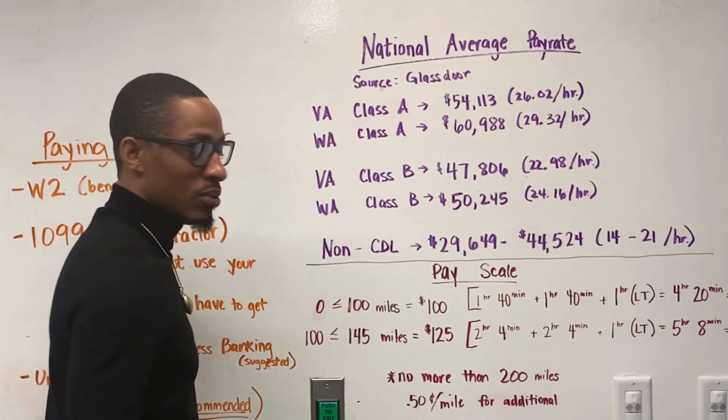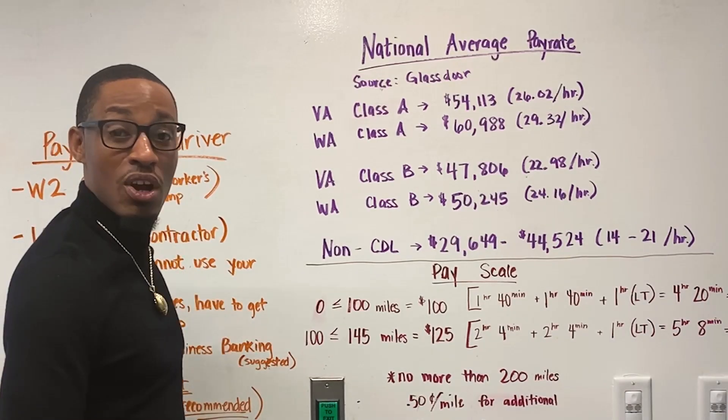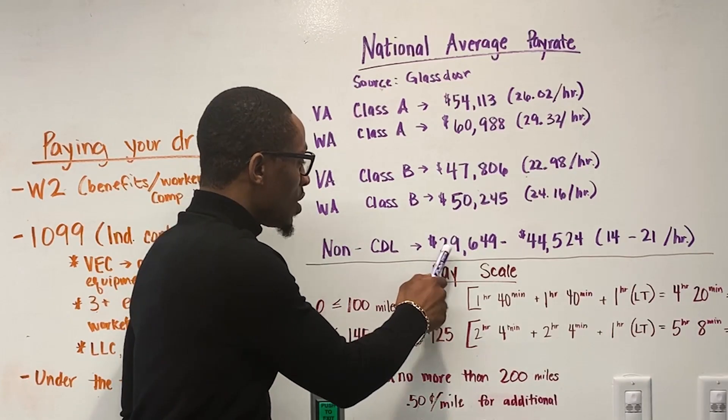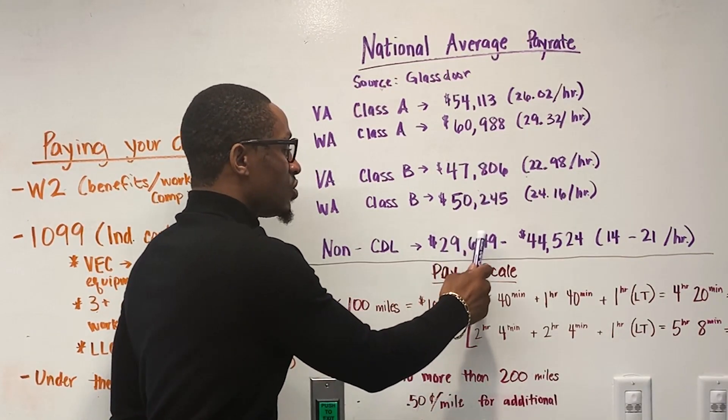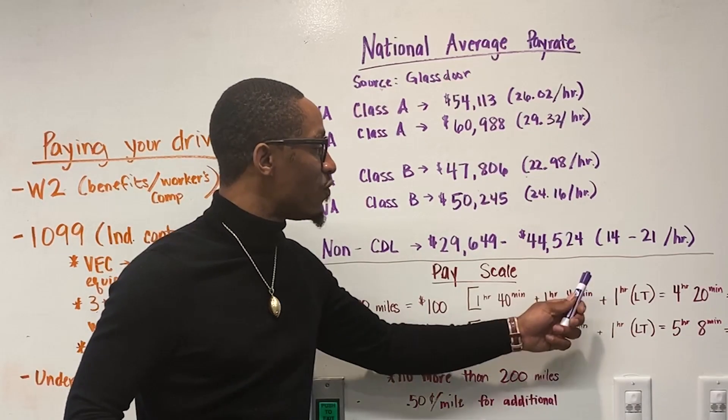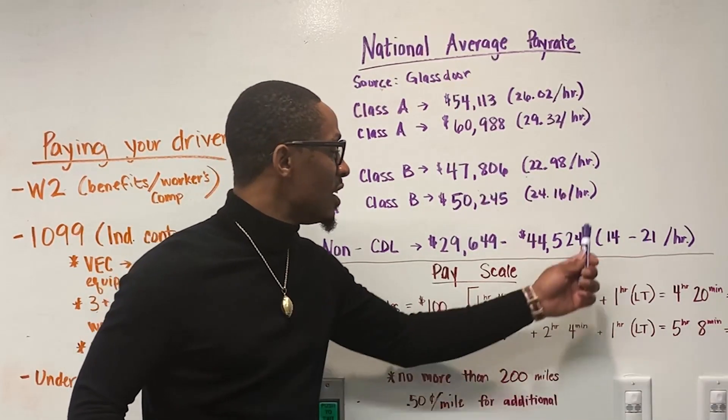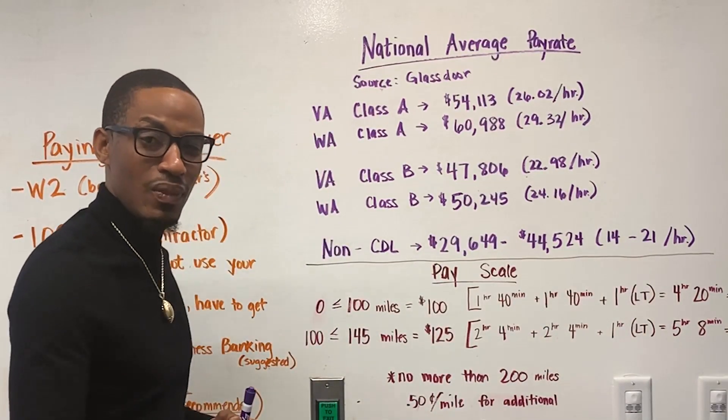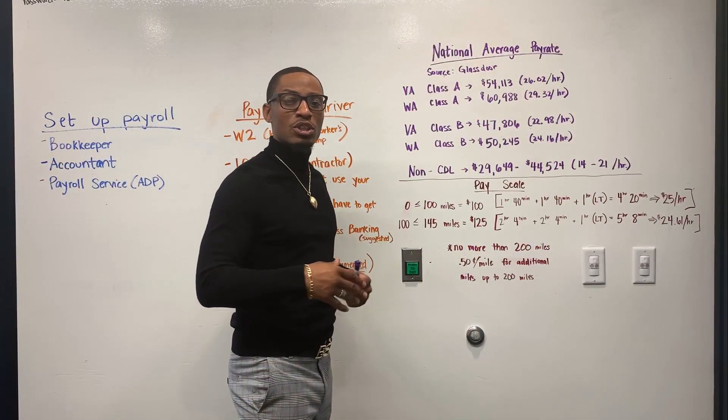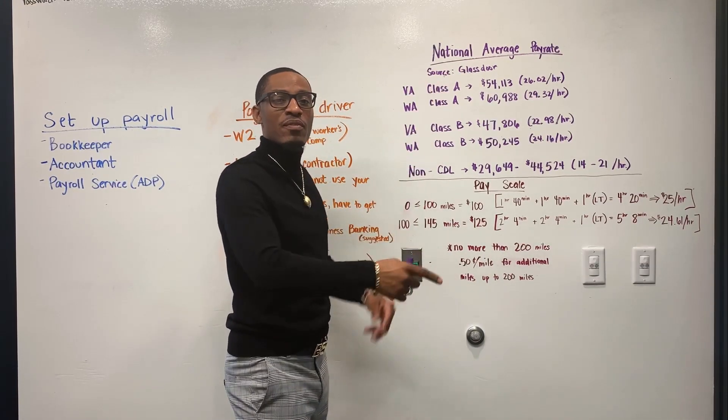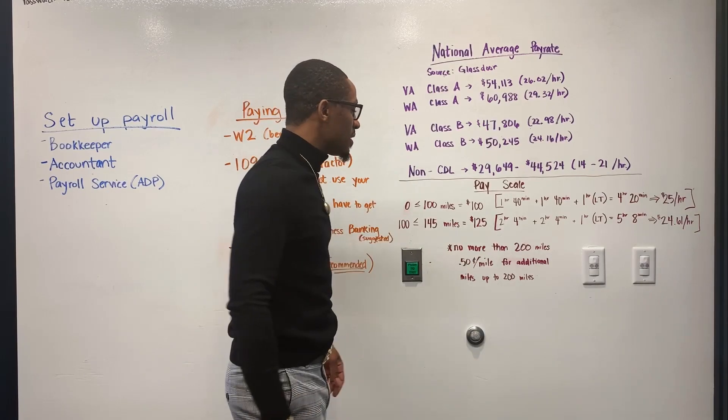Now, non-CDL drivers, which, our drivers are non-CDLs. The average pay starts between $29,649 to $44,524, which translates to anywhere between $14 and $21 an hour. Now, that is important because when we break down the pay, this is what you can reflect back on if your driver ever questions why they're getting paid what they're getting paid.